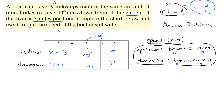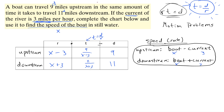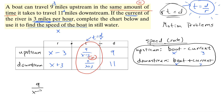The problem says the times are the same. So we take the two time expressions and set them equal: 9 over (x minus 3) equals 11 over (x plus 3). This gives us the equation we need to solve.